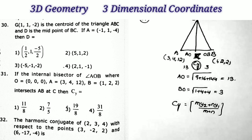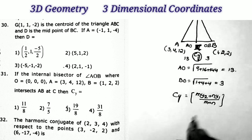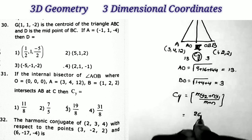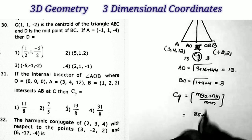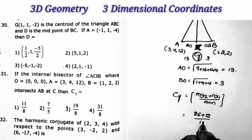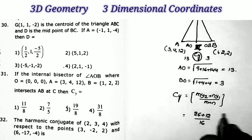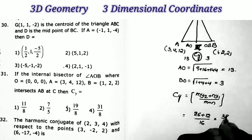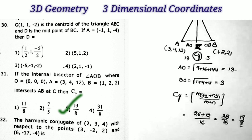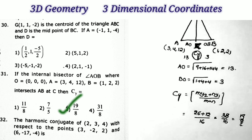We want only the y-coordinate CY. Using the formula: CY = (my₂ + ny₁)/(m+n). Replacing values: (13×2 + 3×4) / (13+3) = (26 + 12) / 16 = 38/16 = 19/8. Therefore the value of CY is 19/8, which is the third option.